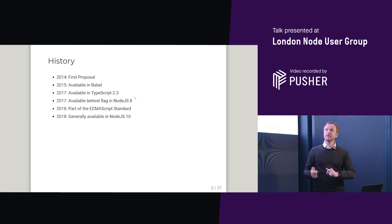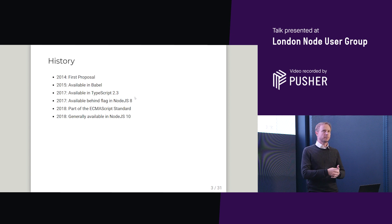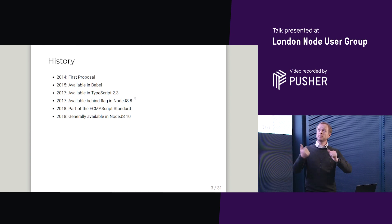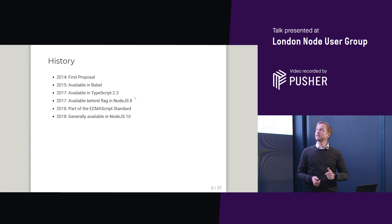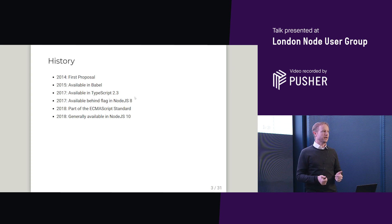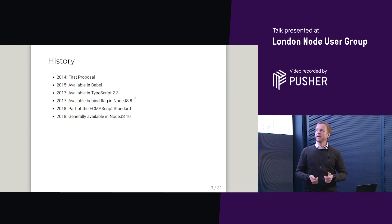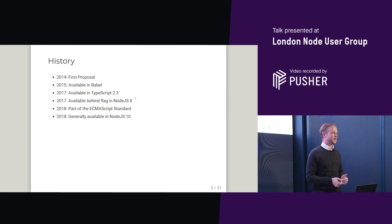Just a little history of async iterators. First proposal in 2014, Babel was pretty quick off the mark, then TypeScript — available in 2017 in Node 8. At the beginning of last year they became part of the ECMAScript standard, and around April they were available in Node 10.